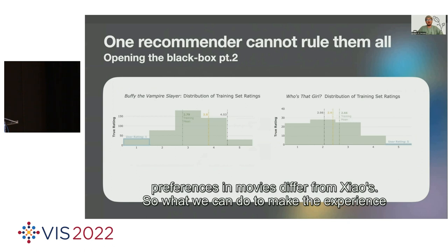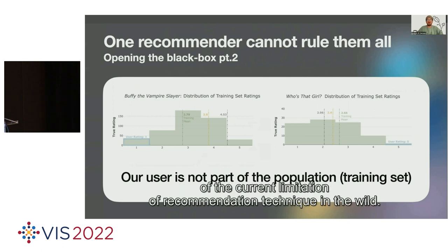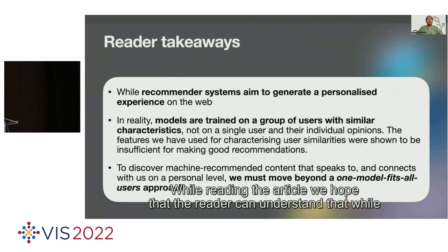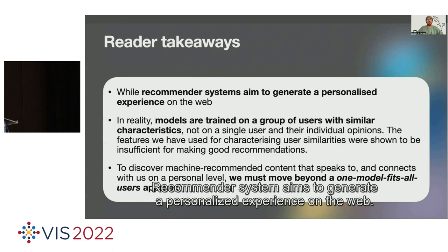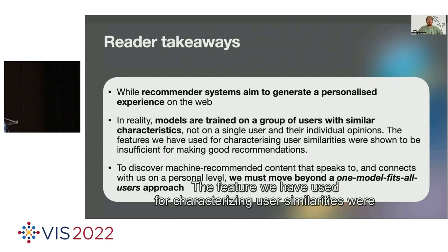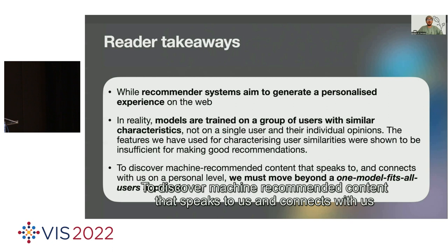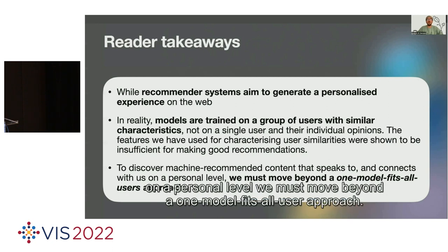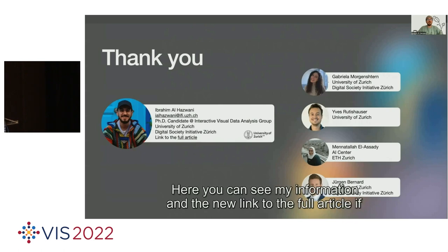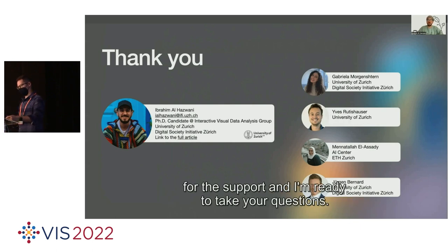In our example, user Xiao really likes the movie 'Who's That Curve,' but neither of the two models recommended it. In contrast, both models recommended Xiao 'Buffy the Vampire Slayer,' which the true value shows he didn't like at all. Using a histogram plot, the reader can understand why the model fails to predict content Xiao should have enjoyed — Xiao is not part of the dense portion of the population, meaning most training users' preferences differ from his. While a recommender system aims to generalize a personalized experience, in reality models are trained on groups of users with similar characteristics, not on a single user. To discover content that truly connects with us, we must move beyond a one-model-fits-all approach.